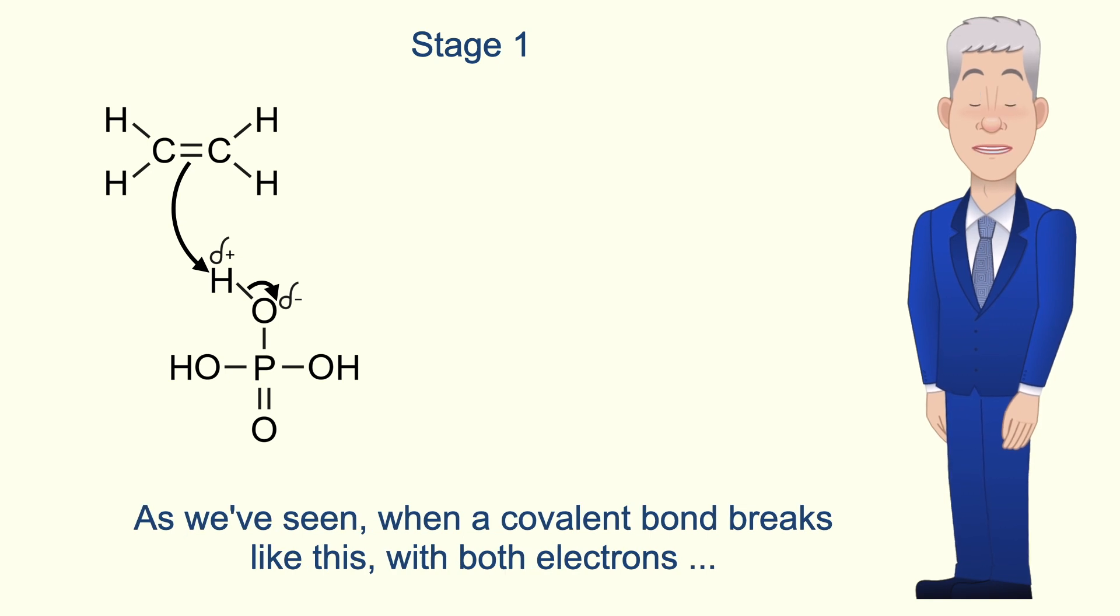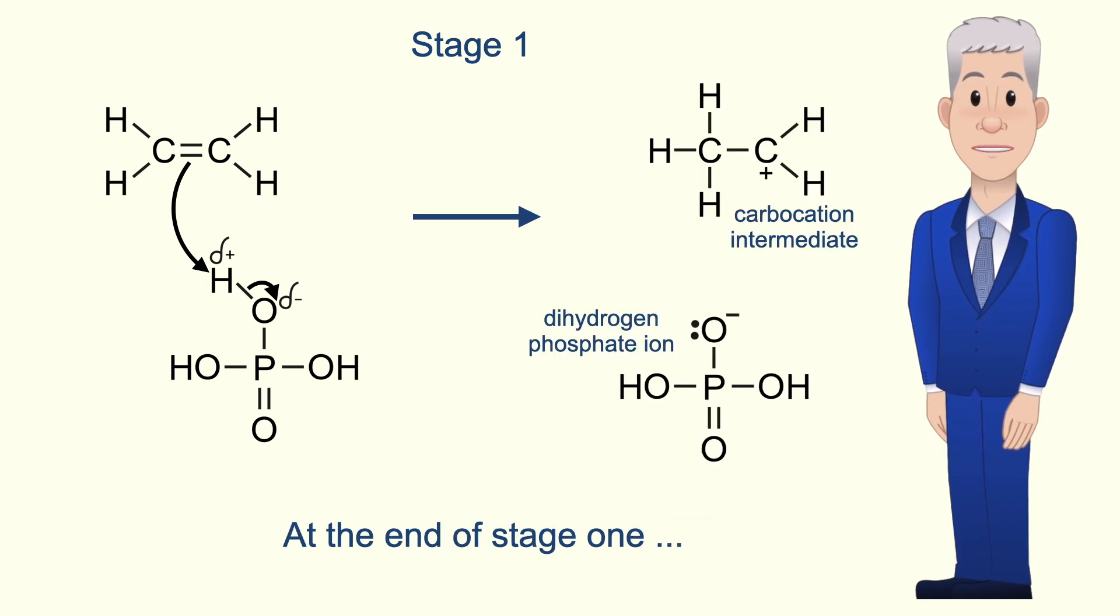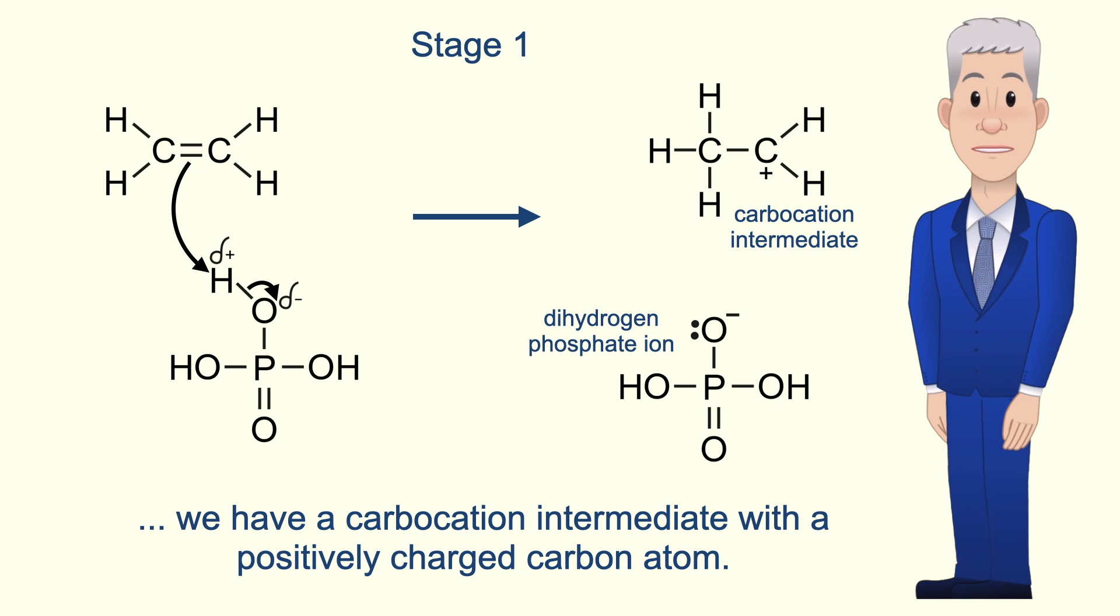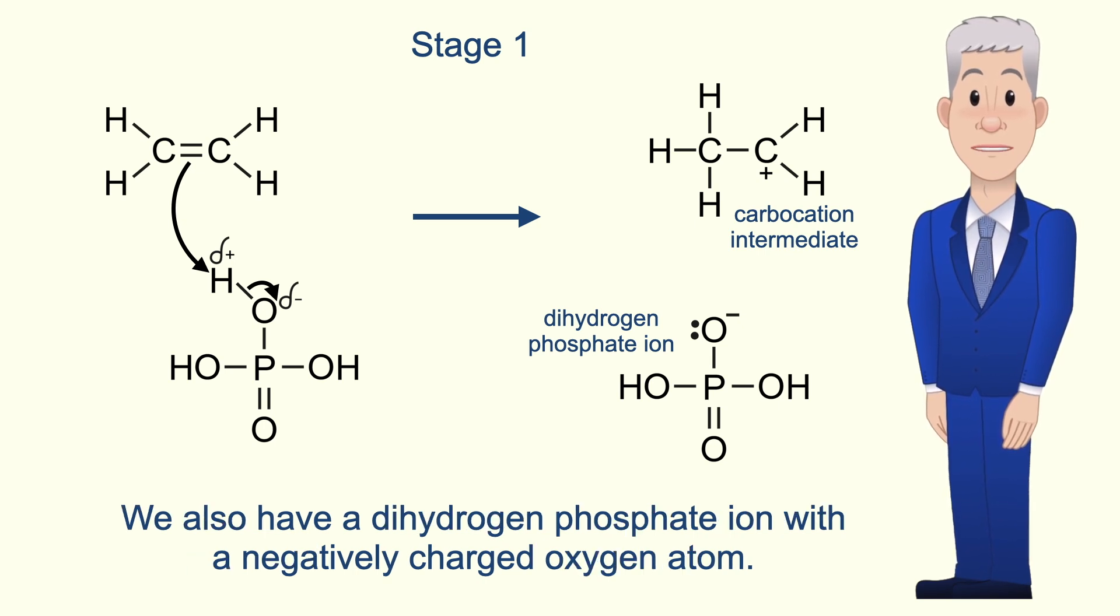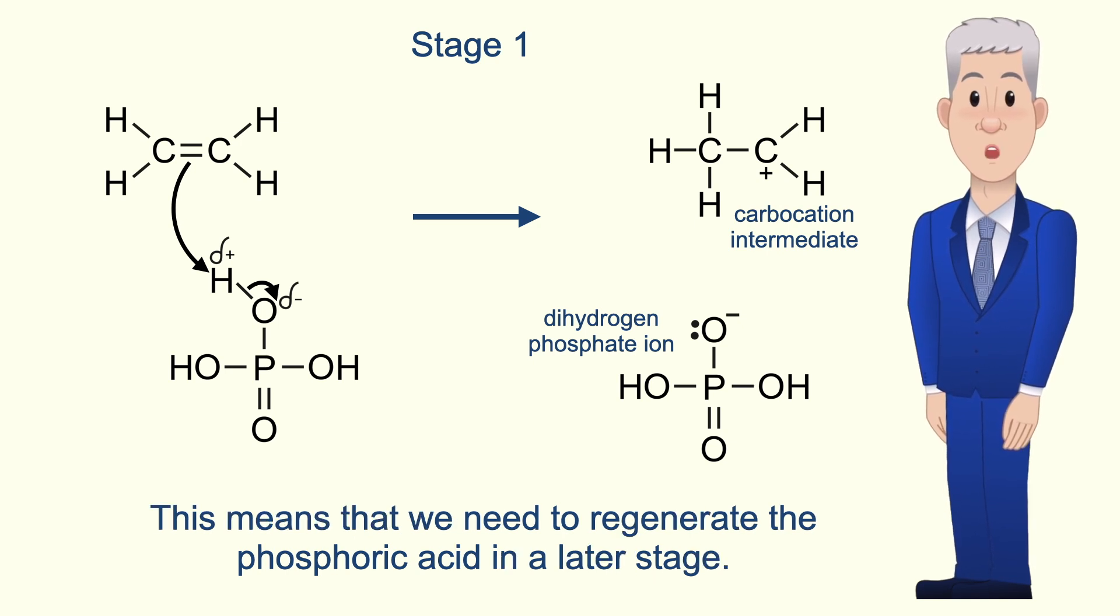When a covalent bond breaks like this with both electrons going to the same atom scientists call this heterolytic fission. So at the end of stage one we've got a carbocation intermediate with a positively charged carbon atom. We also have a dihydrogen phosphate ion with a negatively charged oxygen atom. Remember that the phosphoric acid is a catalyst so we need to regenerate the phosphoric acid in a later stage.